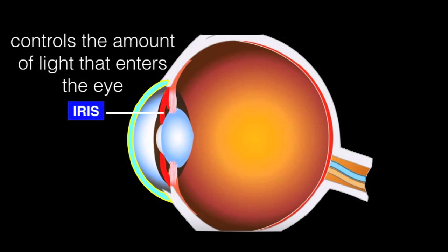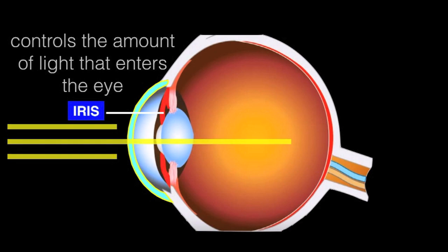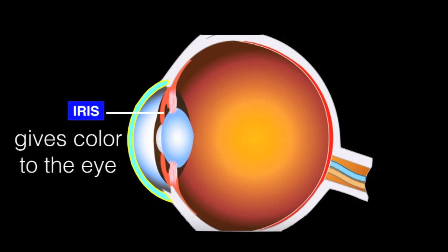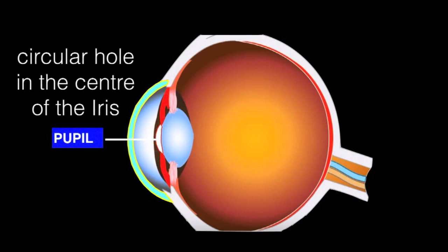The iris controls the amount of light that enters into our eye. The iris also gives color to the eye. This part is called the pupil.